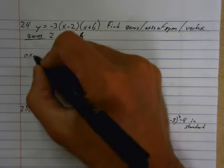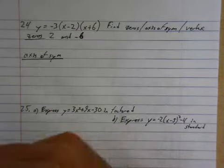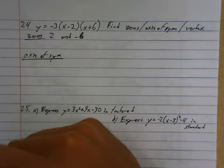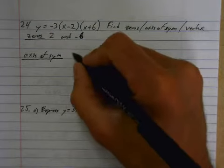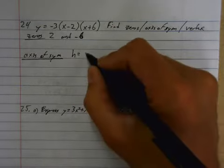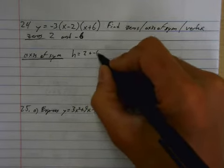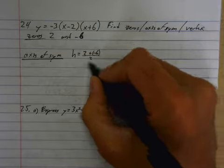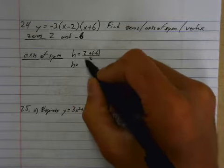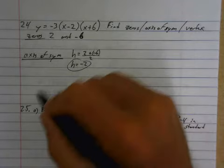Now, axis of symmetry. The axis of symmetry is right in between the two zeros. So the axis of symmetry, also known as h, is equal to—you add these two together and divide them by two to find the middle. So that plus negative six over two. So h is equal to negative four divided by two, which is negative two. So that's your axis of symmetry.